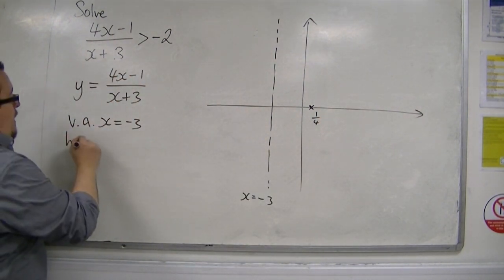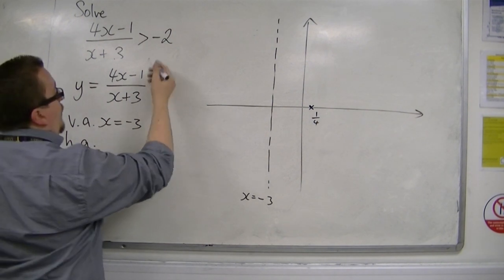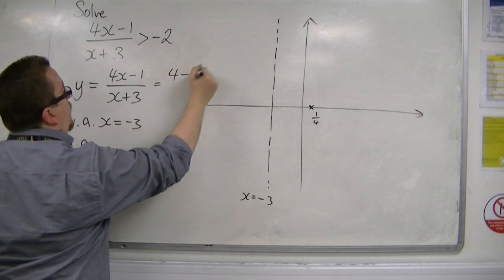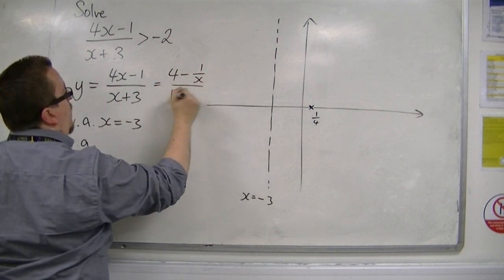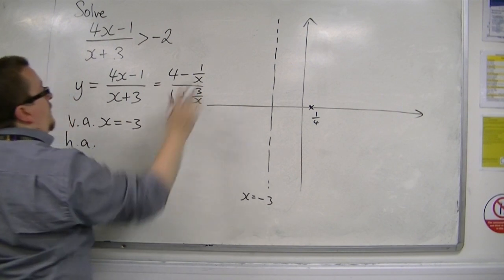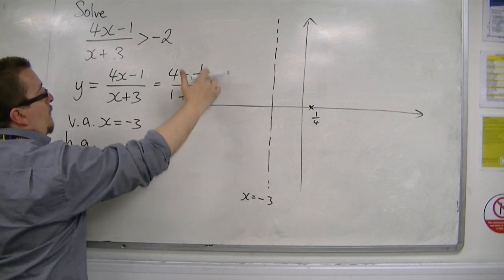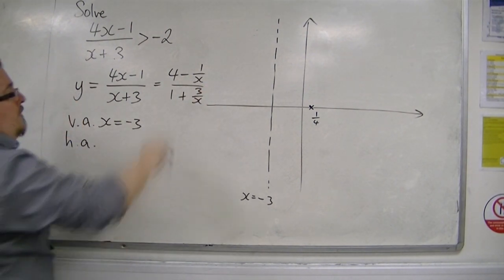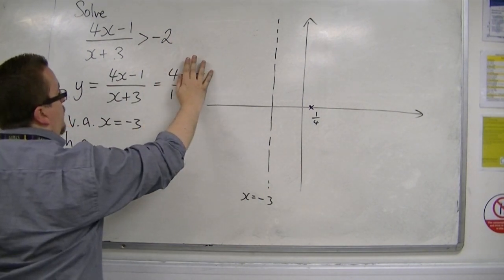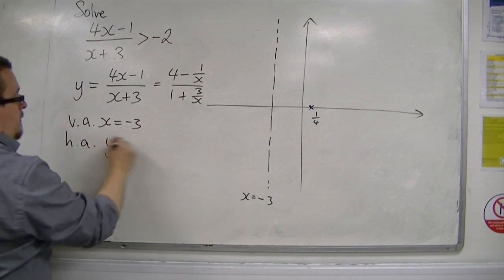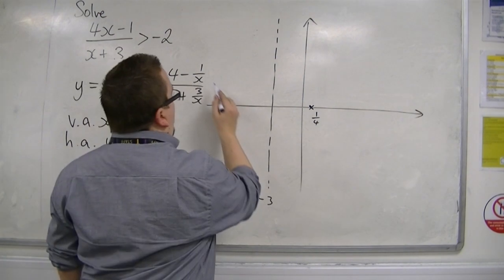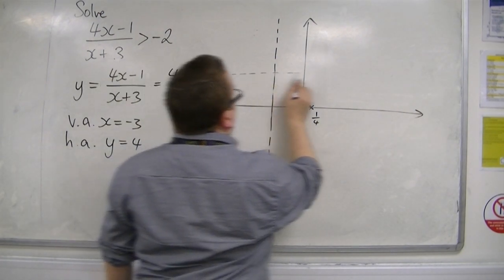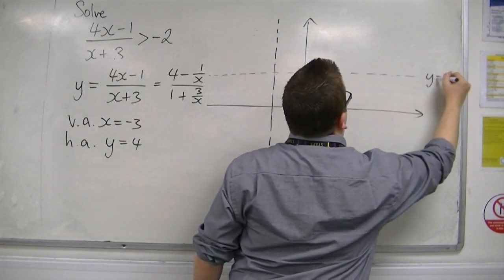There's going to be a horizontal asymptote. Dividing top and bottom by x, we get 4 minus 1 over x over 1 plus 3 over x. So when x gets very large and positive, those fractions go to 0, and I'm just going to be left with y equals 4. So there is a horizontal asymptote of y is equal to 4.